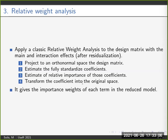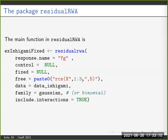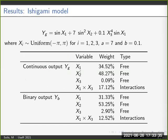So the package residual RWA has the main function, which includes the response, control, fixed, free variables, and also the kind of family that we want to apply. We can estimate all this procedure as we explained. In fact, using a simple Ishigami model which contains free and interaction terms that are relevant to the model, we obtain a very accurate result according to the Ishigami model. Of course we did a lot more simulations, but for a matter of time, we cannot present it here.